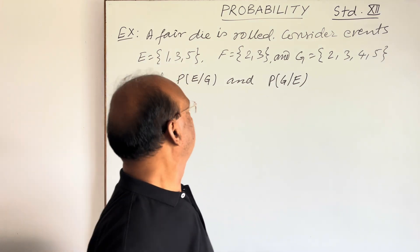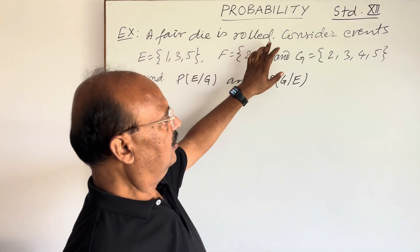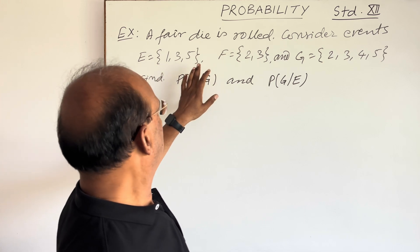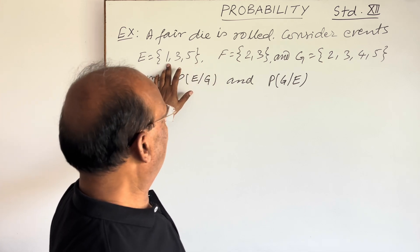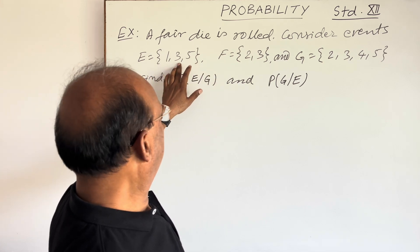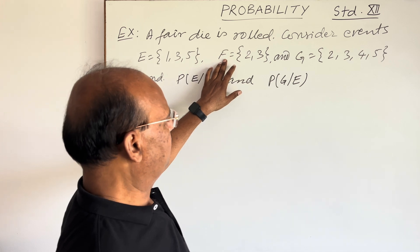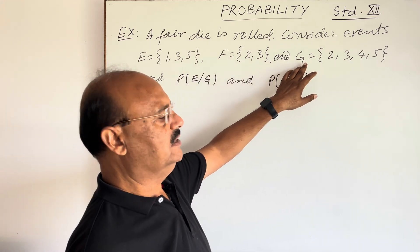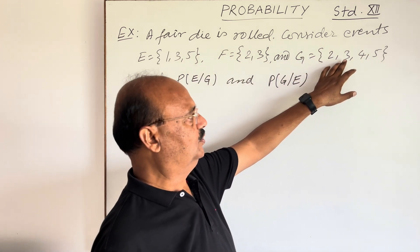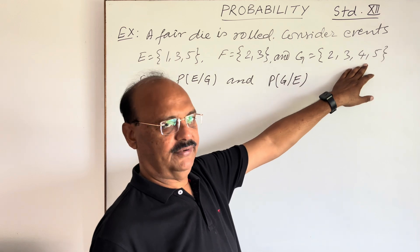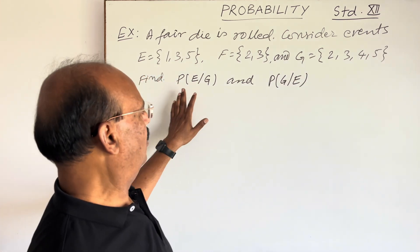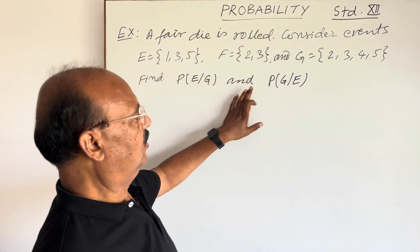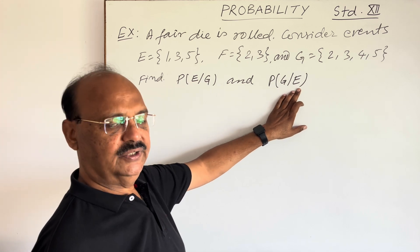Here the question is: a fair die is rolled. Consider event E having elements 1, 2, 3, 5; event F having elements 2, 3; and event G having elements 2, 3, 4, 5. We have to find the probability of E conditioned to G, and the probability of G conditioned to E.